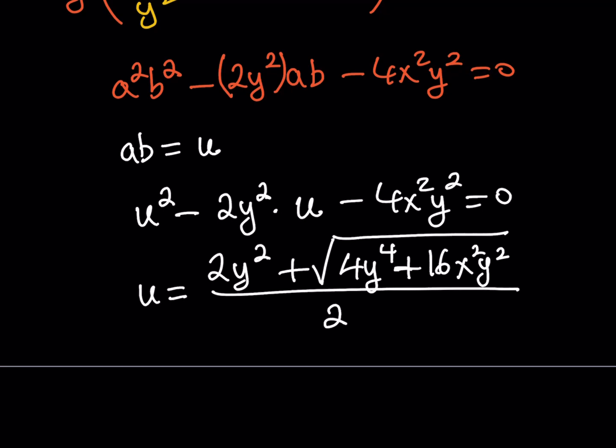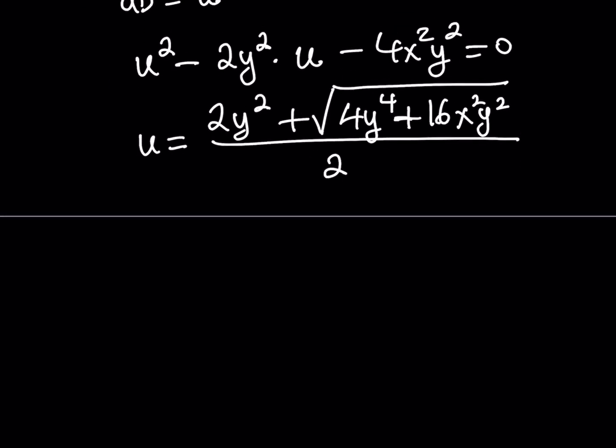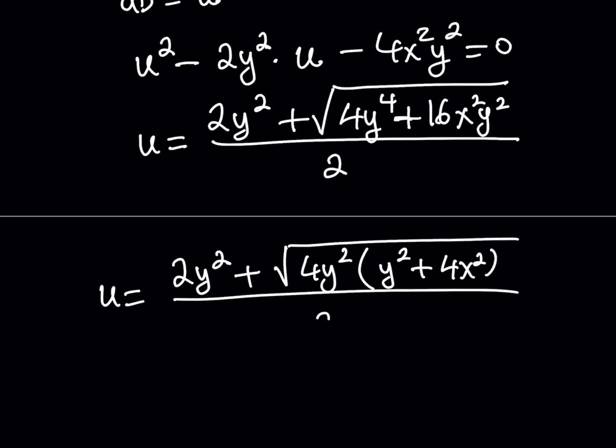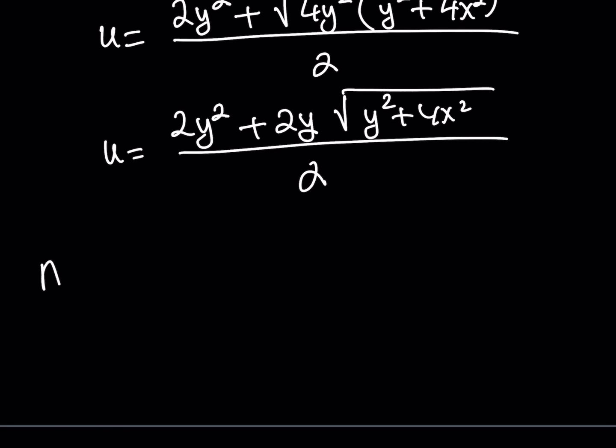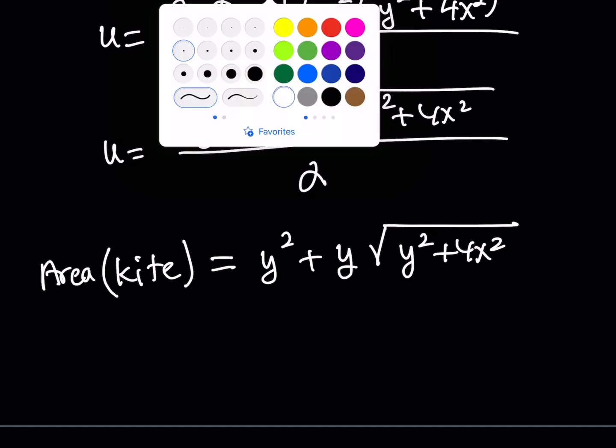We're almost done. Let's just simplify this expression a little bit, make it a little nicer looking, and then we'll be done. From here, what I can do is I can pull out some terms. Inside the radical, we have a common factor, which is 4y². So if I factor that 4y², I should be getting y² + 4x². If I take it out, that's going to give me 2y² + 2y multiplied by the square root of y² + 4x². We're not done yet. We're still going to be able to simplify this. You've got to remember that we were trying to find the area of the kite all this time, and we called it U. So the area of the kite, in simplest form, is then y² + y times the square root of y² + 4x². And that brings us to the end of this video.